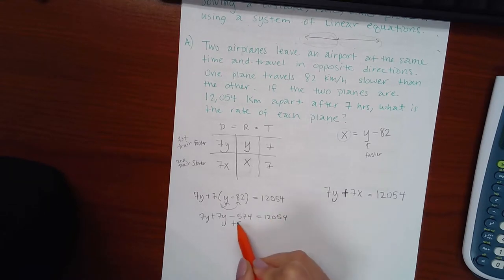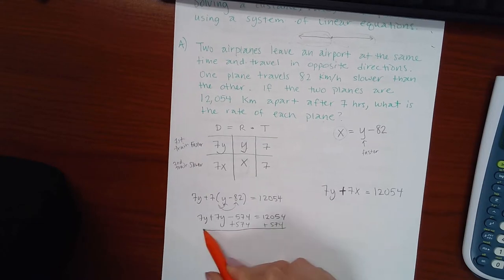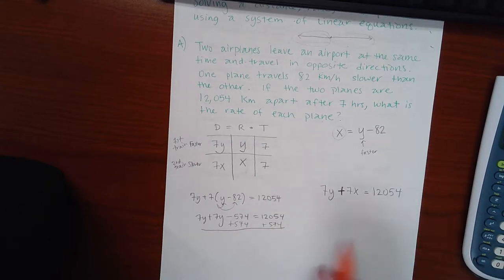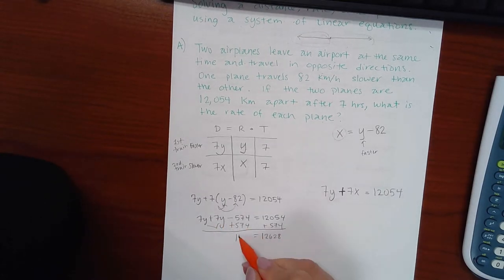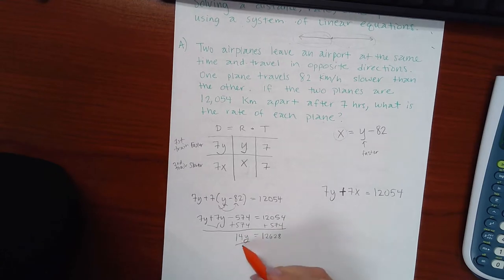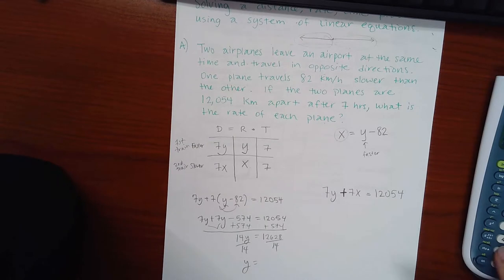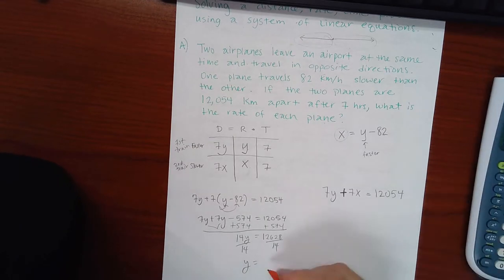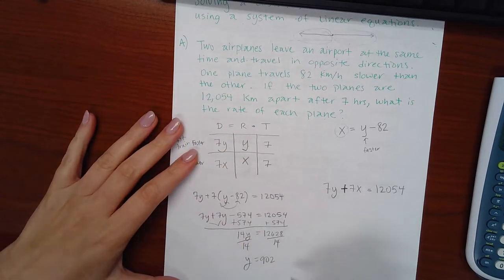So then I'm going to distribute my 7. I'm going to add this constant over to the other side. I'm going to divide both sides by 14. And I get 902.